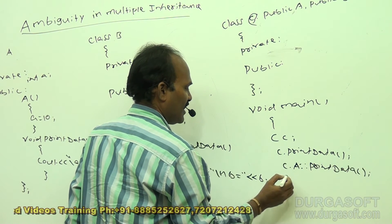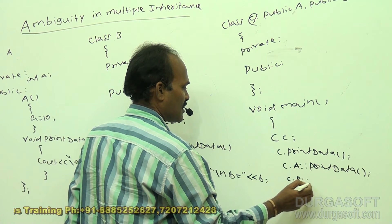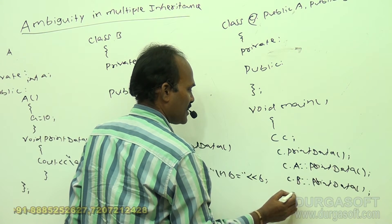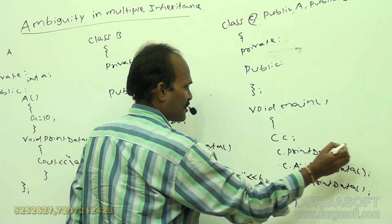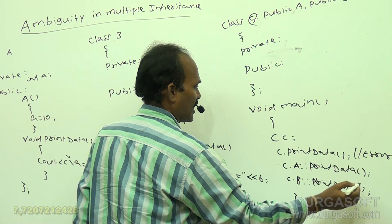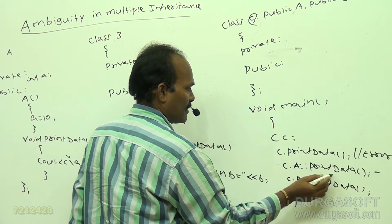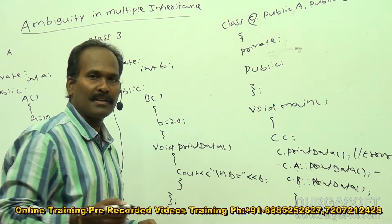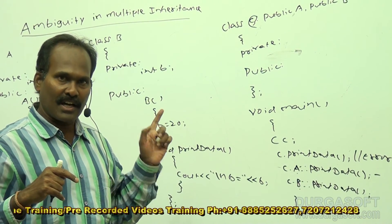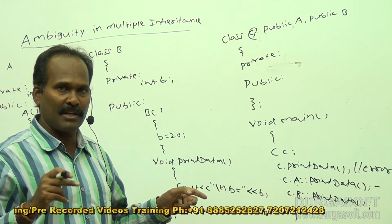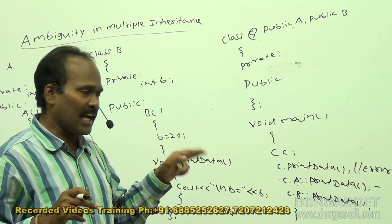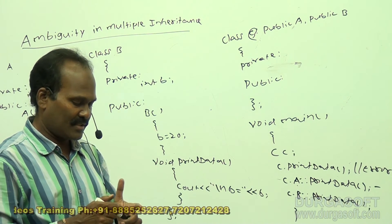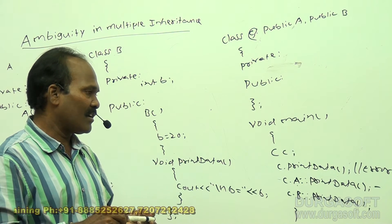In the same way, you can say C dot B scope resolution operator print data to call class B's print data method. Now the ambiguity problem will be solved. The object name is the derived class object, followed by the class name, scope resolution operator, and then print data. The values are printed as 10 and 20.